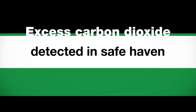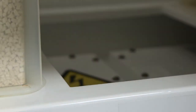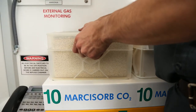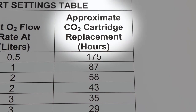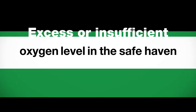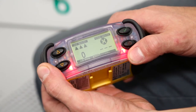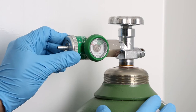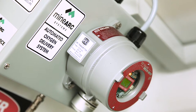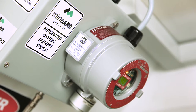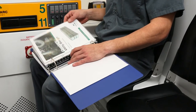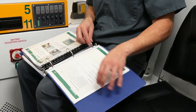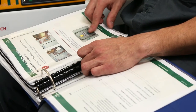Gas Testing Guide: Excess carbon dioxide detected in safe haven — if carbon dioxide levels exceed 1%, remove all Marcosorb CO2 cartridges from the scrubber and replace with new cartridges. Refer to the life support settings table for approximate Marcosorb CO2 cartridge replacement duration. Excess or insufficient oxygen level in the safe haven — if oxygen level is less than 18.5% or greater than 23%, adjust the oxygen regulator up or down one notch accordingly. Please note, for models that include an automated oxygen delivery system, it is not necessary to adjust the oxygen regulator. For further instructions on operating the ChemSafe utility design, refer to the photographic operating procedures located in the operating procedures manual finder.